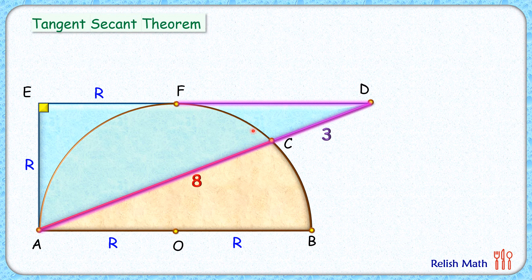So using tangent secant theorem, we will get DF square is DC times DA. DC is 3 and DA is 11. So DF square is 3 times 11 or 33, and DF will be square root of 33. So this length DF is square root of 33.